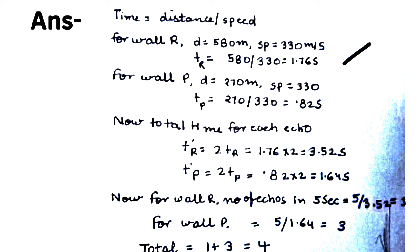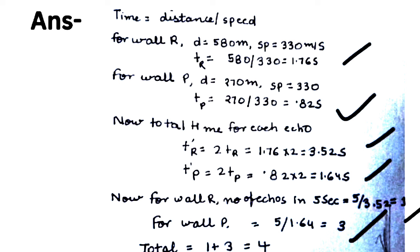Number of echoes from wall R in 5 seconds: 5 ÷ 3.52 ≈ 1. Number of echoes from wall P in 5 seconds: 5 ÷ 1.64 ≈ 3. Total number of echoes = 1 + 3 = 4. The right answer is Option D.